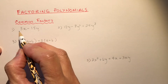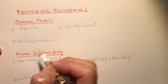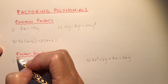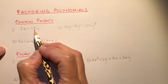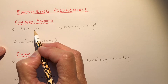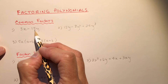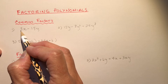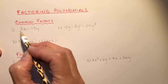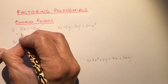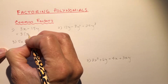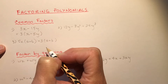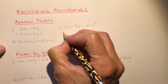For factoring common factors, you look at each of the terms and ask: is there something common to both? First look at the numbers — we have a 3 and a 15. What can I divide each of these terms by? You'd say 3, because 15 is divisible by 3. So you place a 3 out front, divide each term by 3, and that's it. You take out the common factor.